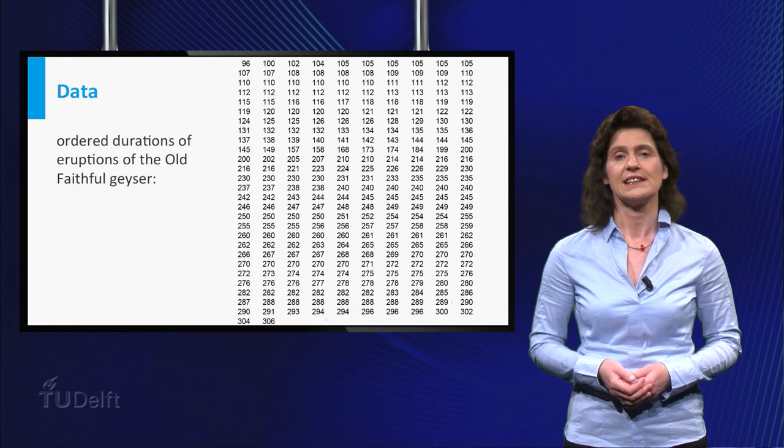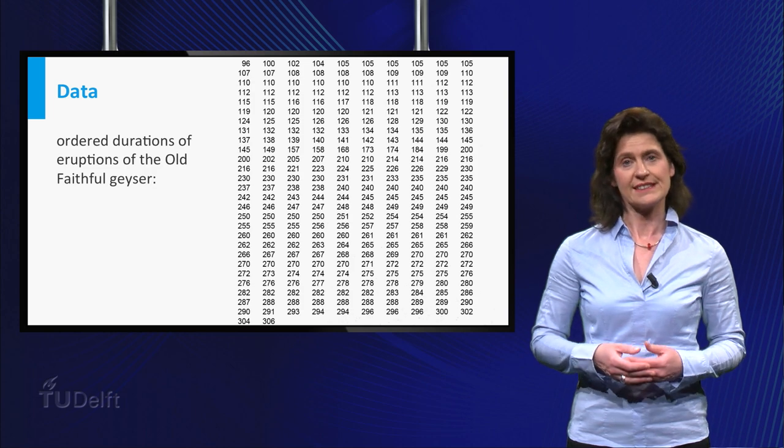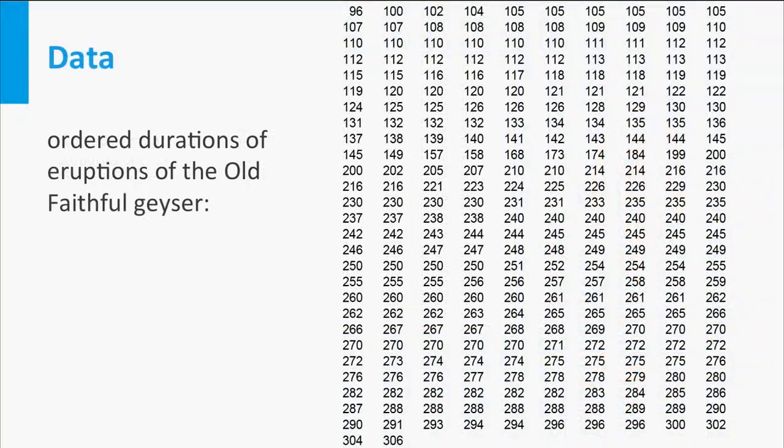To make things a little more organized, let's order the set in ascending order. Then you get the following ordered data set. And hey, you can now immediately say that the observations vary from 96 to 306 seconds.